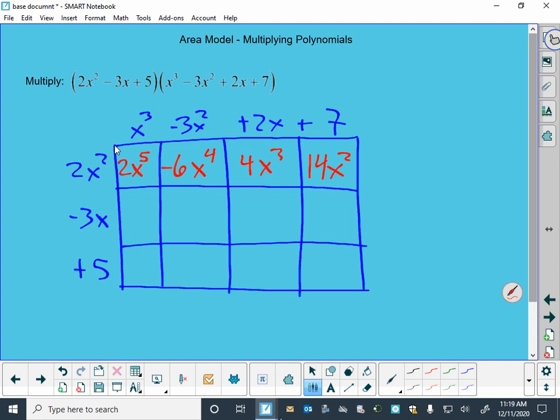Then negative three times one is negative three, and x times x³ is x⁴. Negative three times negative three is positive nine. x times x² is x³.